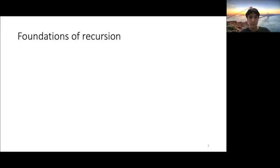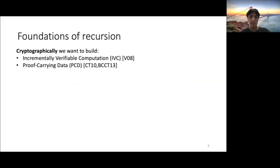So cryptographically, what we want to build is two things. Incrementally verifiable computation, which is what I showed in the previous slide. And proof carrying data, which is a generalization to IVC. In proof carrying data, essentially, you can recurse along any directed acyclic graph.